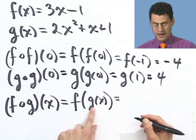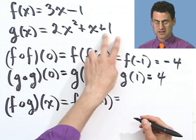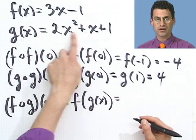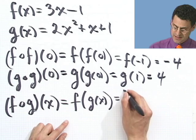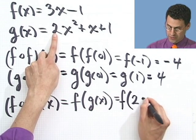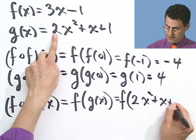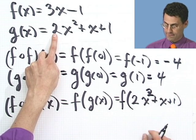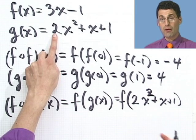So what does that mean? Well, I'll put g of x right here. Here's g of x. So I'm just going to write that out. So if I write that out, what would I see? I would see f of, and in place of g of x, I'm going to write 2x squared plus x plus 1. Now what do I do?